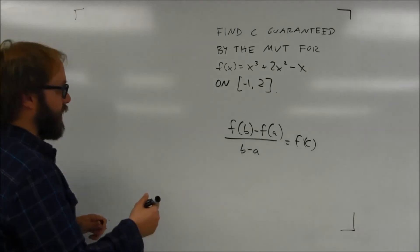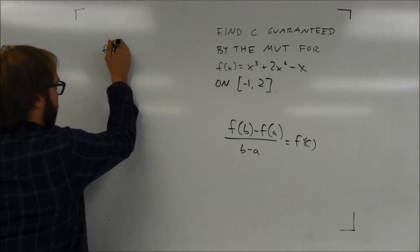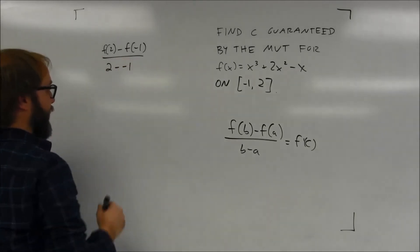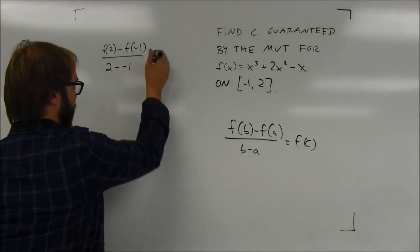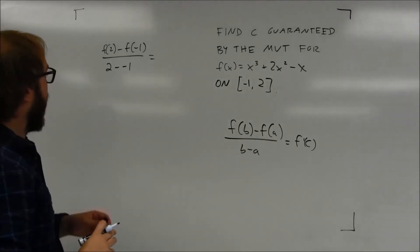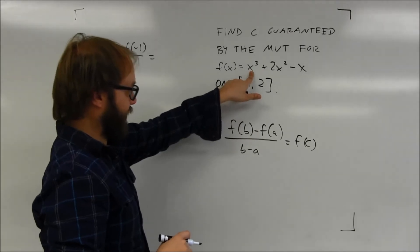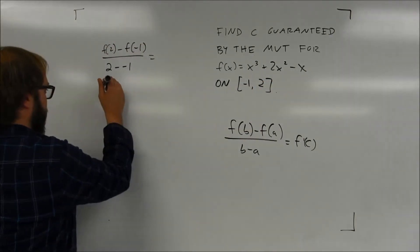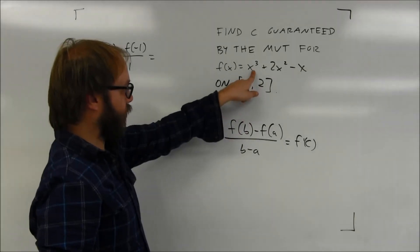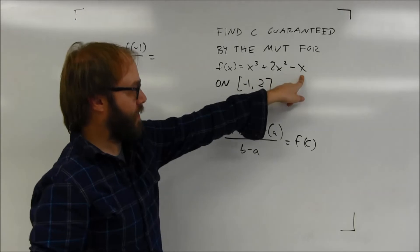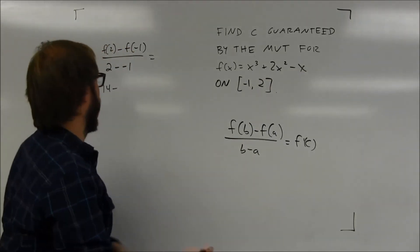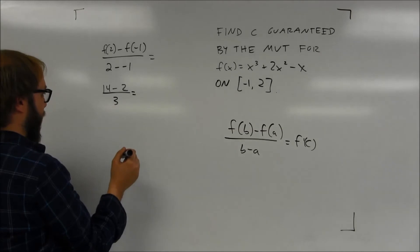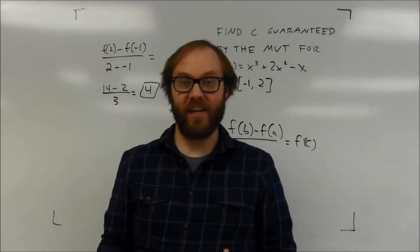The average rate of change is f(b) minus f(a), which is f(2) minus f(negative 1). Substituting 2 into the function gives 8 plus 8 minus 2, which is 14. Substituting negative 1 gives negative 1 plus 2 plus 1, which is 2. So it's 14 minus 2, all over 2 minus negative 1, which is 3. That works out to be 4. So the average rate of change is 4.